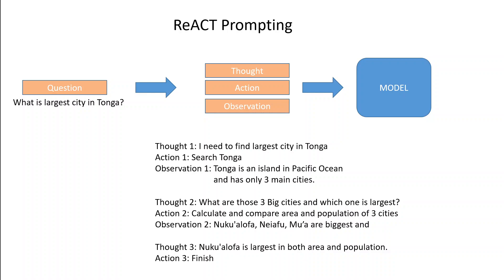The thought is a reasoning step that helps demonstrate to the foundation model how to tackle the problem and identify an action to take. The action is simply an API that the model can invoke from an allowed set of APIs. The observation is a result of carrying out the action.